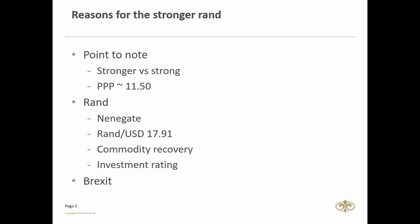Since then, Minister Gordhan came in and tried to steady the ship. We also saw a recovery in commodities, which is always good for the rand — commodity prices started recovering in 2016. Under Minister Gordhan, we managed to avoid a possible investment downgrade. The rand also strengthened against the pound due to Brexit, where the UK decided to exit the European Union.